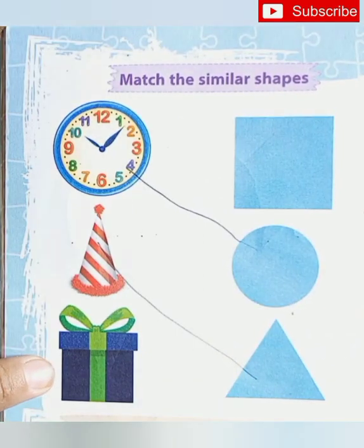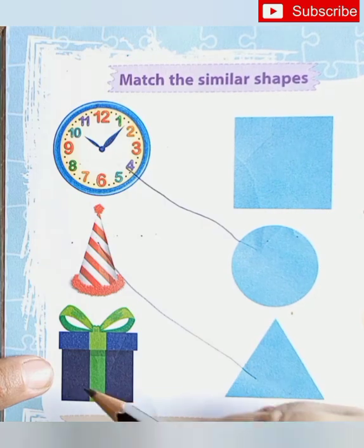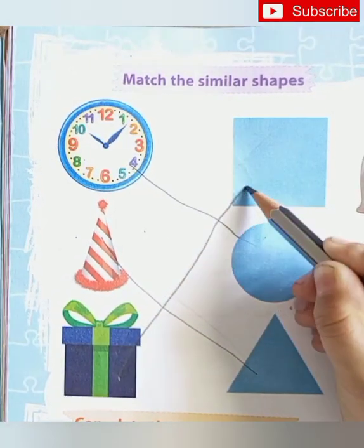Next is? Gift. Gift shape is? Square. Square. Square. Match with the square. Very good.